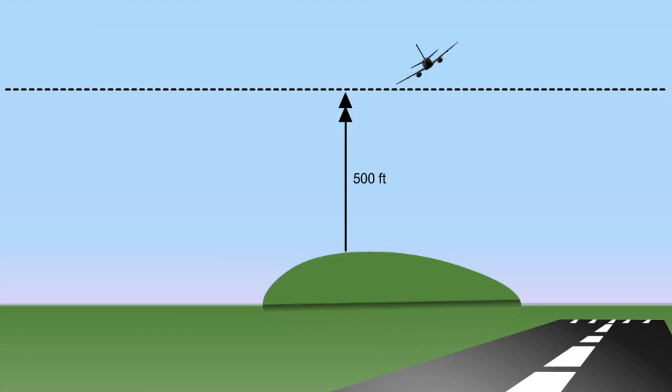Therefore, noise preferential routes will not include a turn below an aircraft height of 500 feet, or 150 metres, above ground or obstacles throughout the turn.